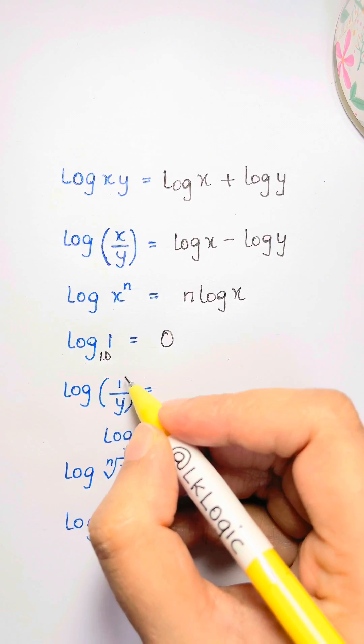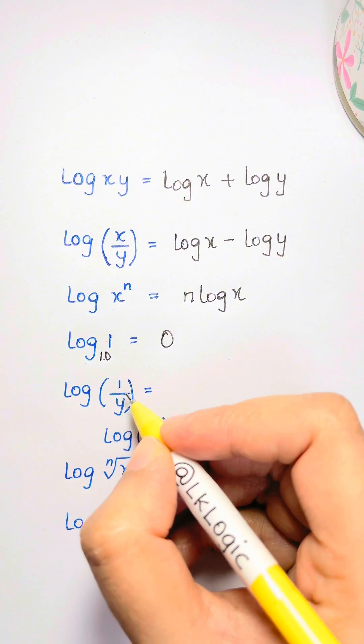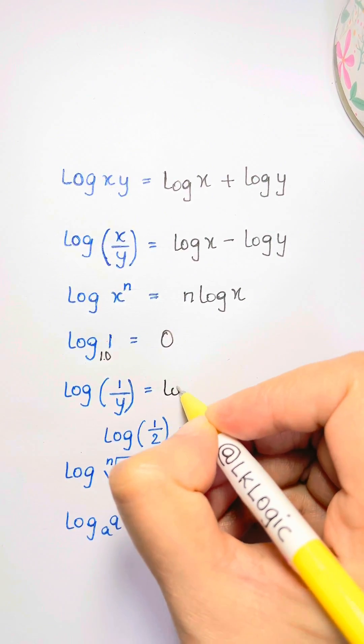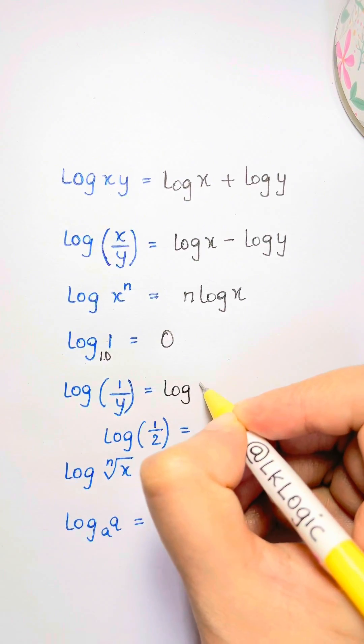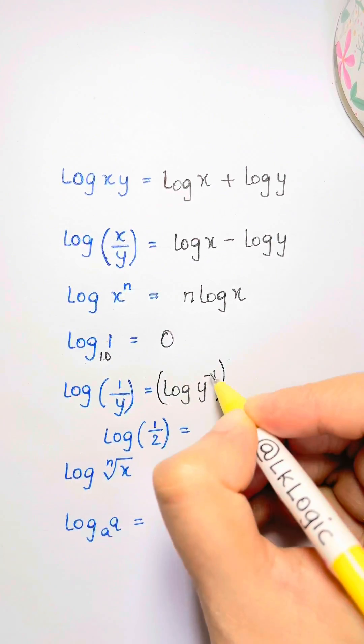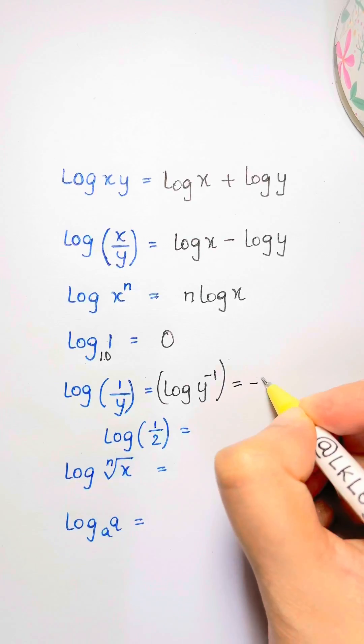Here, this is a really important one. We say this a lot in year 13 when we do our integrations. Now, just to show you some intermediate steps: one over y, you can rewrite it as y to the power of minus one. So the minus one comes down, so you have minus one log y.